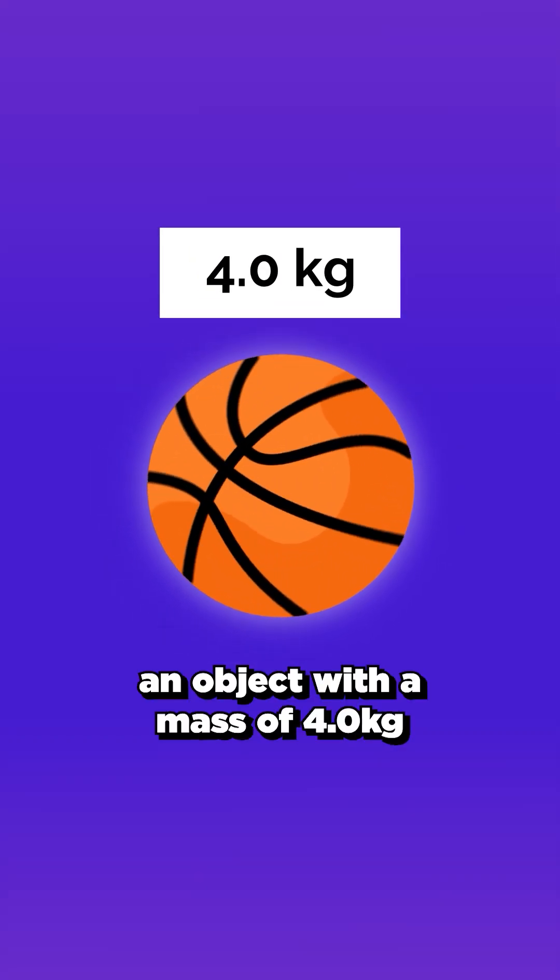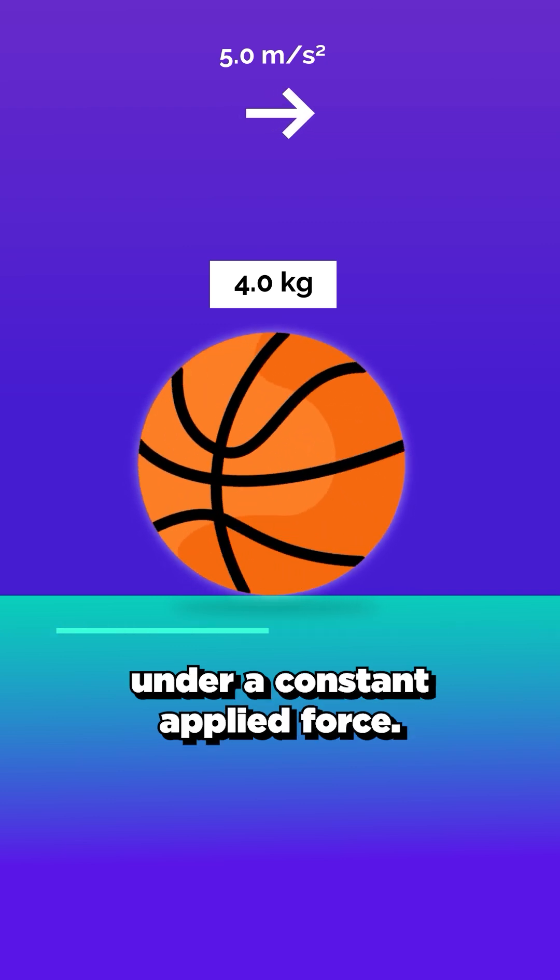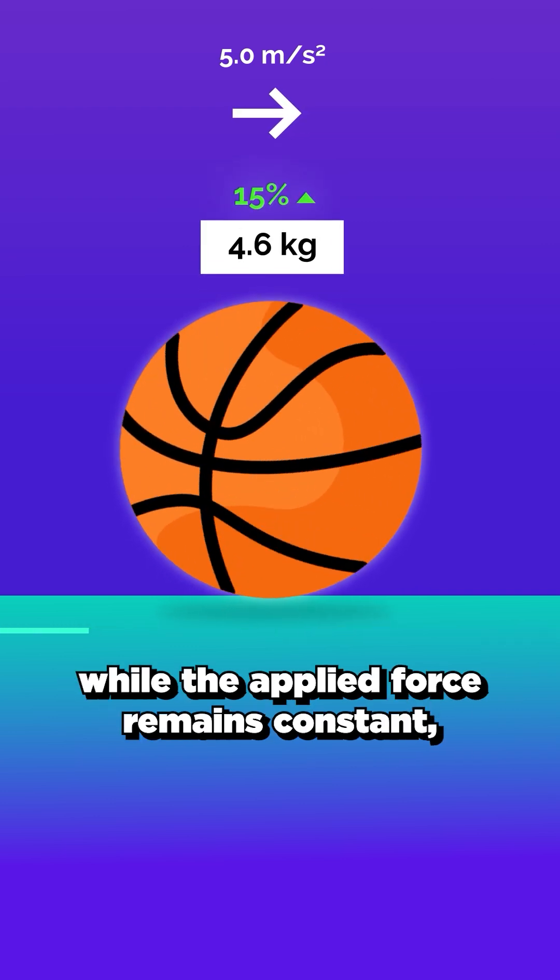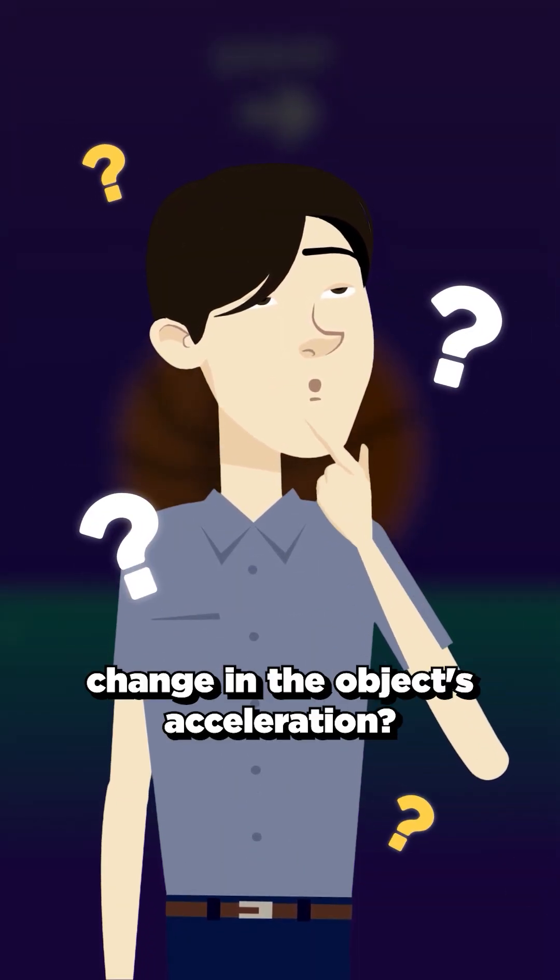For example, an object with a mass of 4 kilograms is accelerating at 5 meters per second squared under a constant applied force. If the mass of the object is increased by 15%, while the applied force remains constant, what is the approximate percentage change in the object's acceleration?